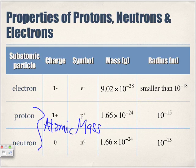Remember how we calculated the number of neutrons — that number isn't directly found in the periodic table. We use the calculation: atomic mass minus atomic number gives us the number of neutrons.